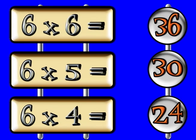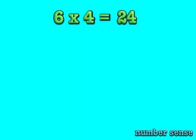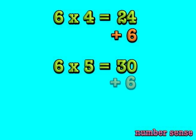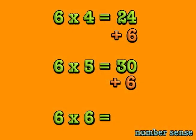When I multiply by 6, sometimes I use some little tricks. 6 times 4 is 24. Add 6 to get 30, which is 6 times 5. Then add 6 again to get 6 times 6, or 36.